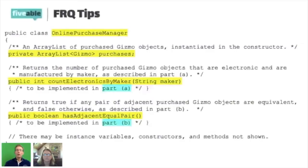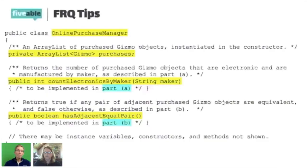When I see Part A and Part B, that's what your students should immediately start thinking about in terms of how they could write that particular method. When it says countElectronicsByMaker, that tells me I'm going to write code to count how many electronics there are based on a certain maker. I ask myself: how am I going to figure out what the maker is? The string maker is the parameter that tells the writer what they're supposed to use to determine which maker it is, so I'll check if this maker matches up with the maker associated with each object in that ArrayList.